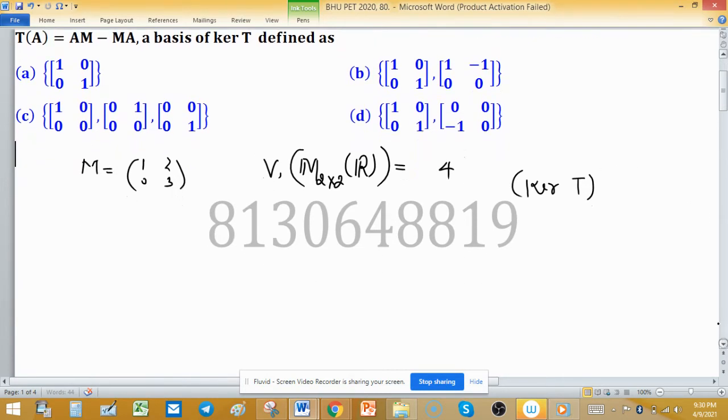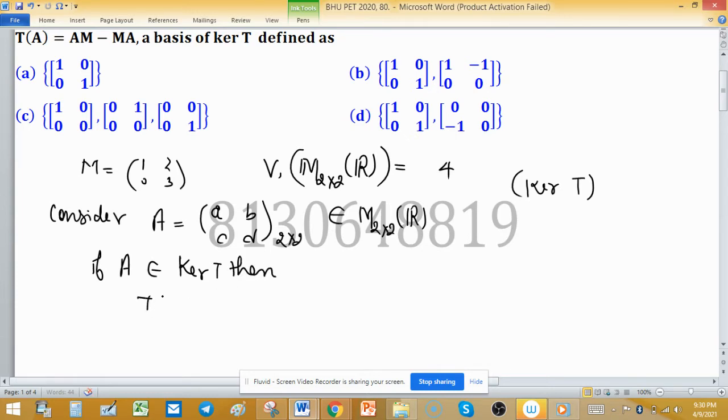Let us consider a matrix 2 by 2 with elements A, B, C, D. It is the general form of 2 by 2 matrices over R. If this element A belongs to kernel T, then by the definition of kernel T, T of A is equal to 0. It means that AM minus MA equals 0.